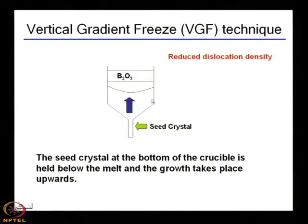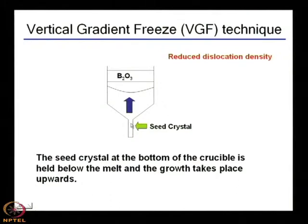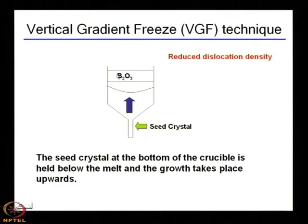In the vertical gradient freeze technique, there is a crucible with a seed crystal at the bottom. Freezing is done dynamically from bottom upwards, electronically and slowly. Obviously, there will be B₂O₃ encapsulation because in gallium arsenide or indium phosphide growth, there will be dissociation of arsenic or phosphorus from the surface, so you need B₂O₃ encapsulation over the molten surface.